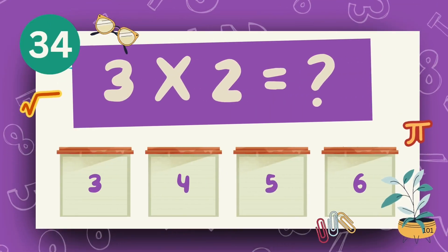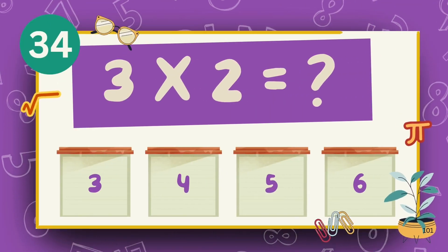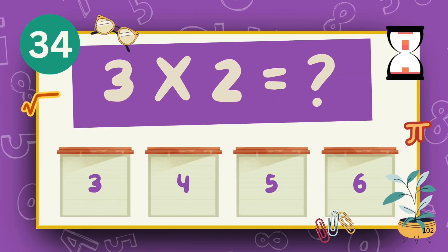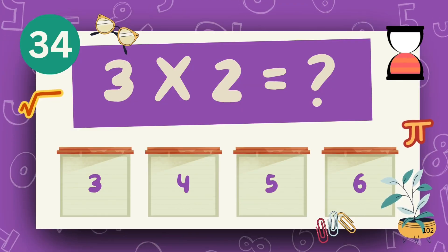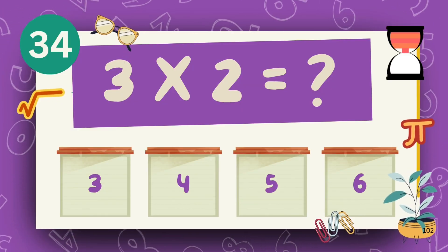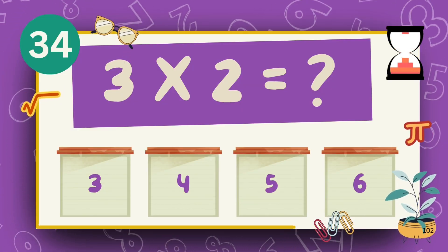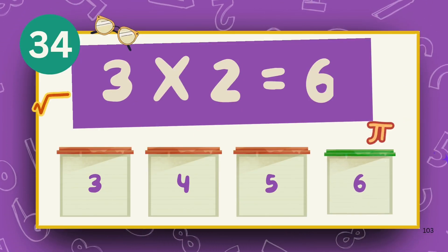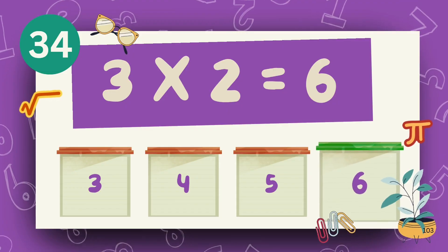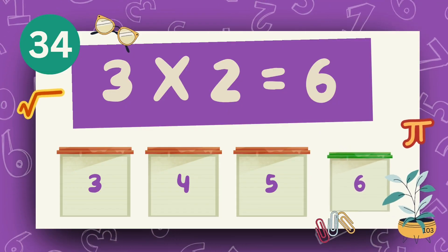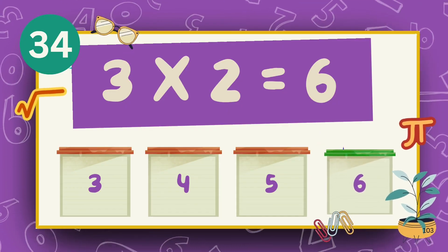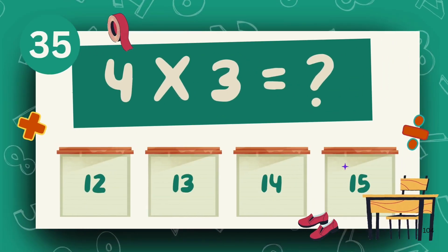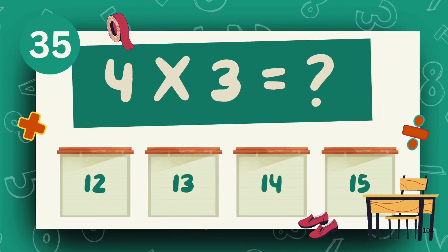What is 3 multiply 2? The answer is 6. What is 4 multiply 3?